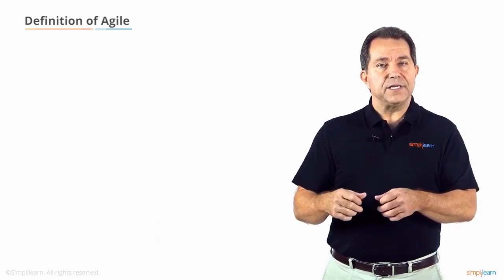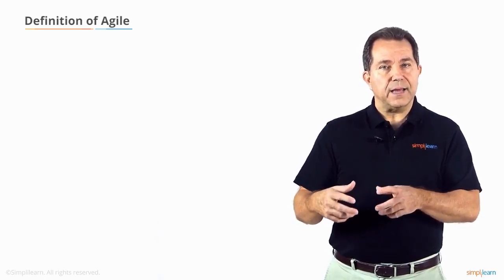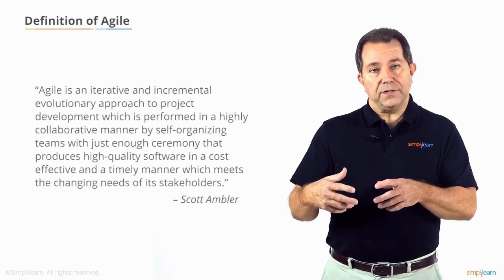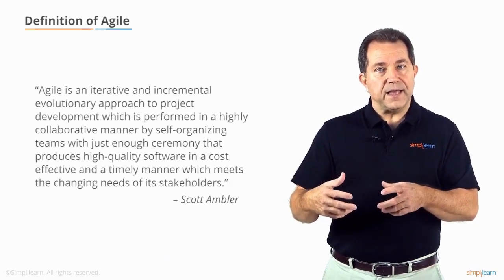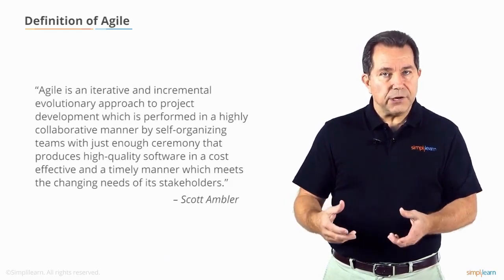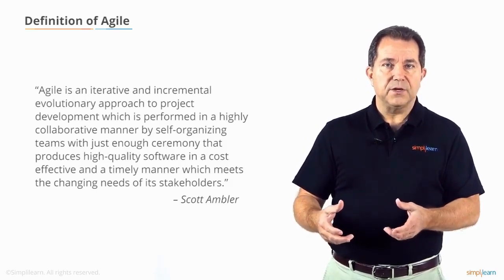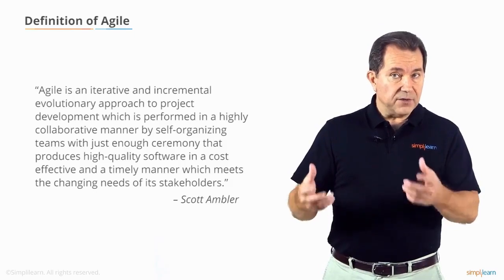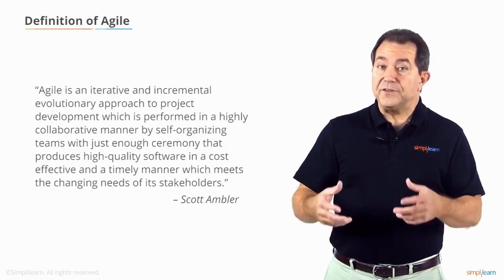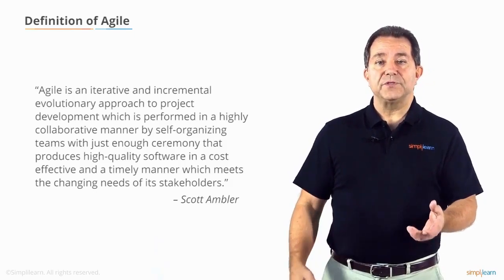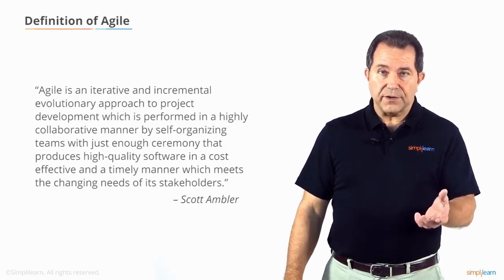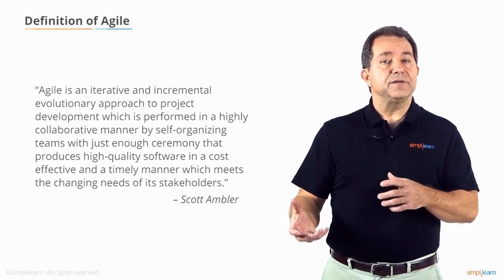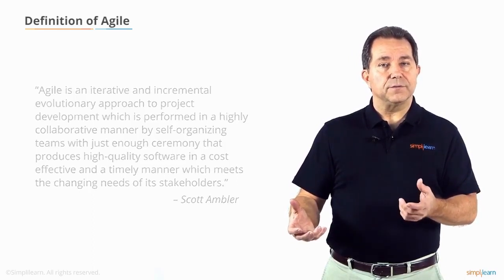One of the thought leaders in the Agile world, Scott Ambler, defines Agile this way: "Agile is an iterative and incremental evolutionary approach to project development which is performed in a highly collaborative manner by self-organizing teams with just enough ceremony that produces high-quality software in a cost-effective and timely manner which meets the changing needs of its stakeholders."